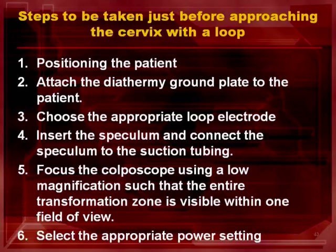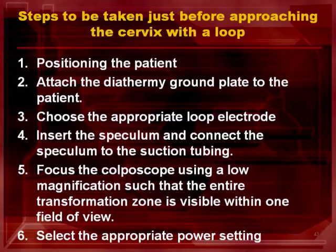The following is the step-by-step video of the loop electrosurgical excision procedure, LEEP. These are the 6 steps to prepare before approaching the cervix with loop electrodes: number 1, position the patient; number 2, attach the diathermy ground plate to the patient; number 3, choose the appropriate loop electrodes; number 4, insert the speculum and connect it to the suction tubing; number 5, focus the colposcope at low magnification so the entire transformation zone is visible within one field of view; number 6, select the appropriate power setting.